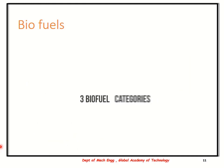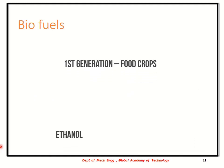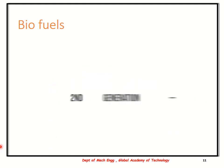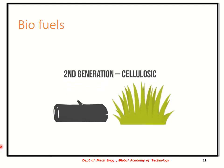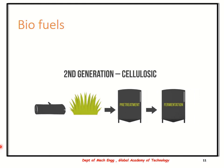Biofuels are grouped into three categories based on the type of feedstock used to produce them. First-generation biofuels are produced from food crops — for ethanol, feedstocks include sugarcane, corn, and maize; for biodiesel, feedstocks are naturally occurring vegetable oils such as soybean and canola. Second-generation biofuels are produced from cellulosic material such as wood, grasses, and inedible parts of plants, which are more difficult to break down through fermentation and therefore require pretreatment before processing.